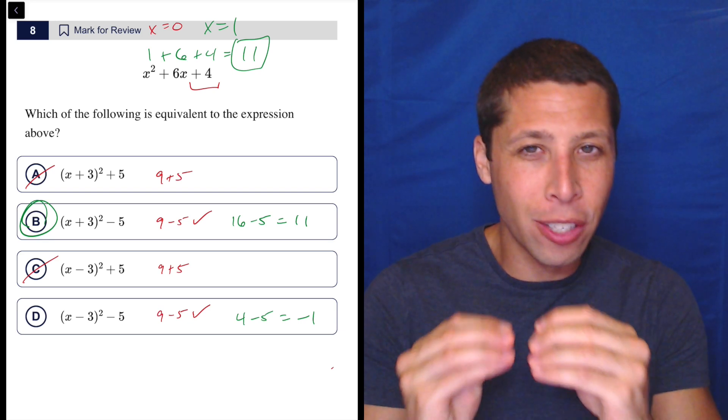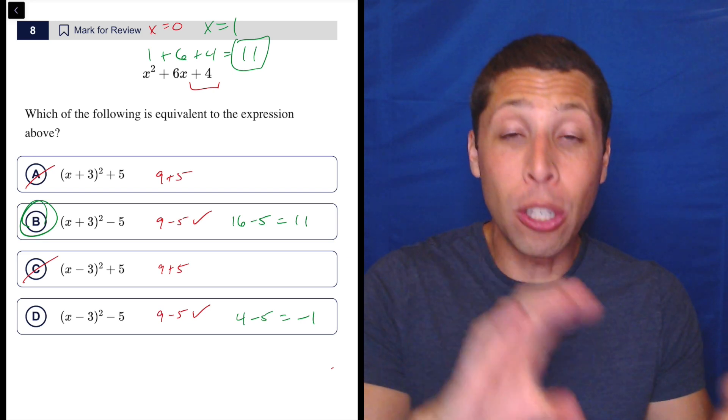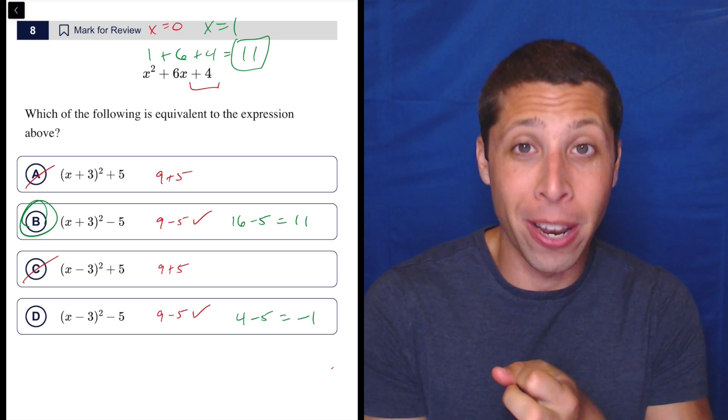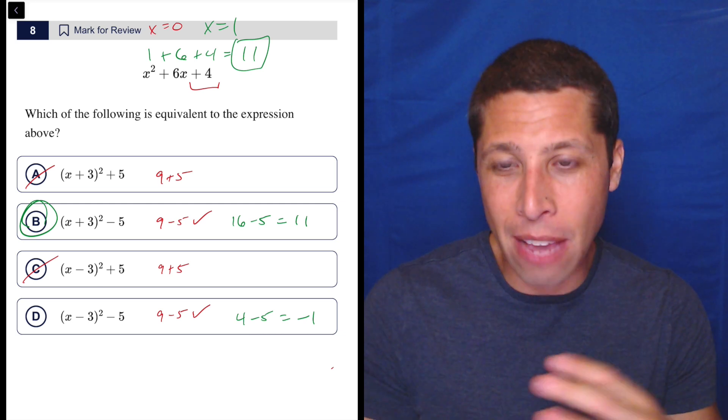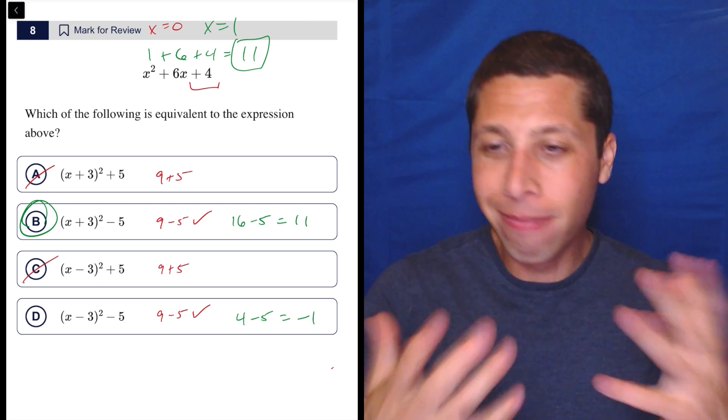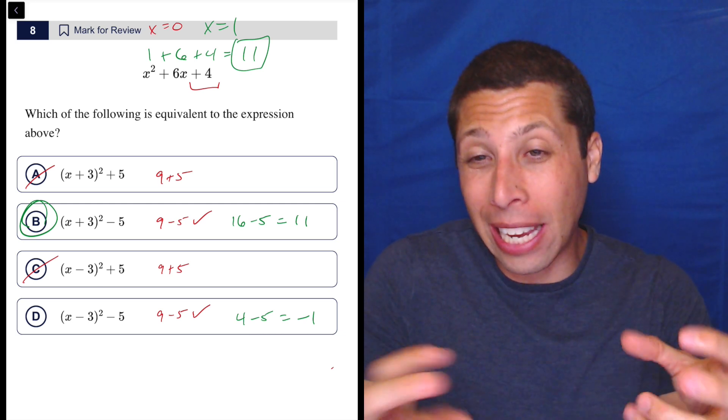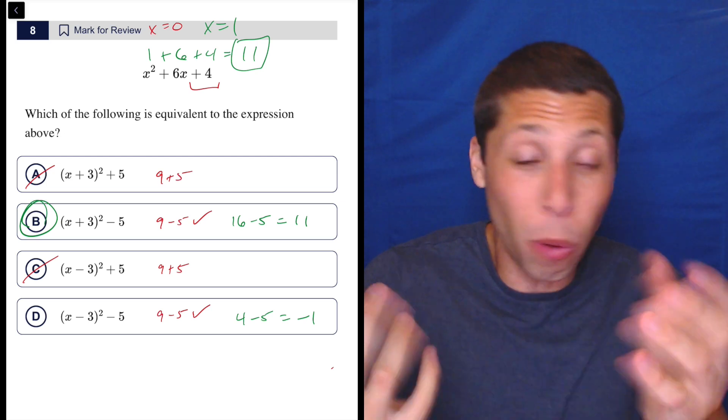The algebra is not terrible. We could complete the square if we remembered it. We could look at these answer choices and foil them out and combine like terms. We could maybe understand how the negatives will behave and understand without even really solving the algebra, like what we need to happen, or we could put it in Desmos.